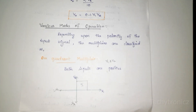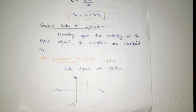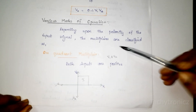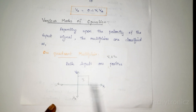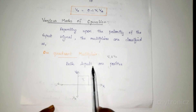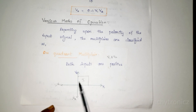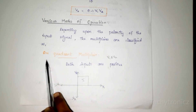Next we discuss the various modes of operation, which depend upon the polarity of the input signal. Depending upon the polarity, multipliers are classified into three types: one quadrant, two quadrant, and four quadrant multiplier. In a one quadrant multiplier, both inputs V1 and V2 are positive, meaning operation is confined to the positive side only.